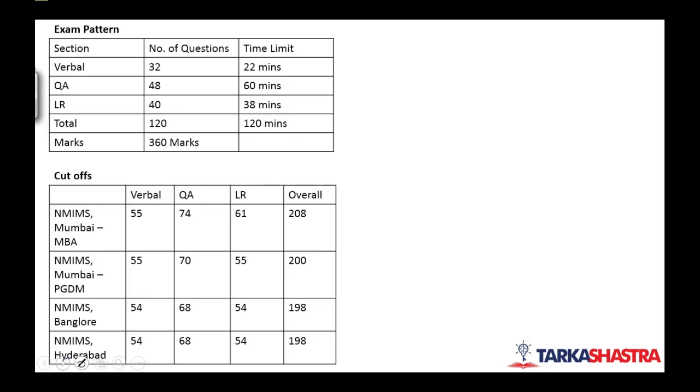Let's look at the exam pattern. Total there are 3 sections, 120 questions. Verbal section has 32 questions in 22 minutes. QA section has 48 questions in 60 minutes and LR section 40 questions in 38 minutes. Total 120 questions in 120 minutes. Each question is of 3 marks and that is where the total marks will be 360 marks.